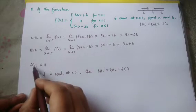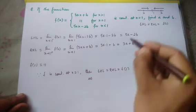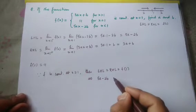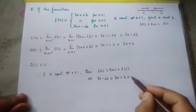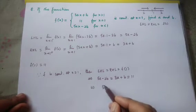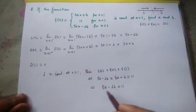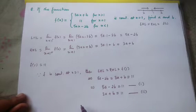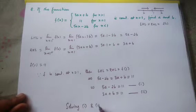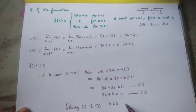The functional value f(1) equals 11. LHL is 5a minus 2b, RHL is 3a plus b. So from here we get two equations: equation 1 is 5a minus 2b equals 11, and equation 2 is 3a plus b equals 11. Solving equations 1 and 2, we get a equals 3 and b equals 2.